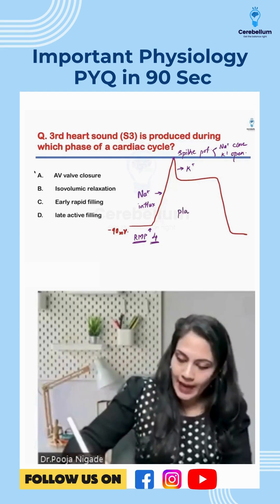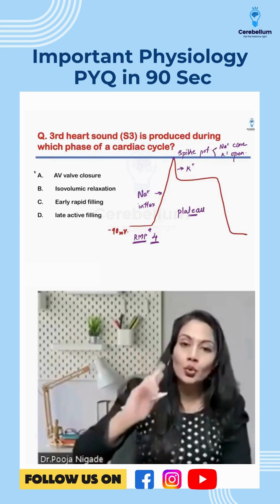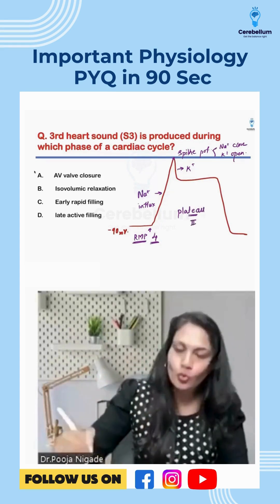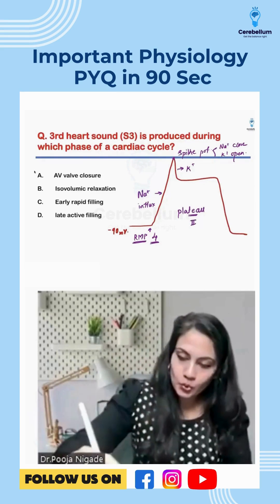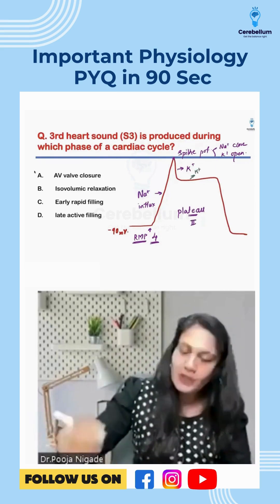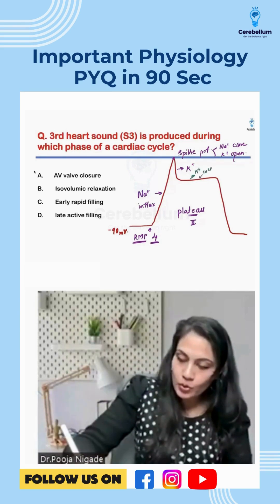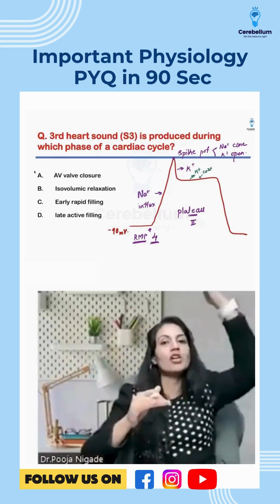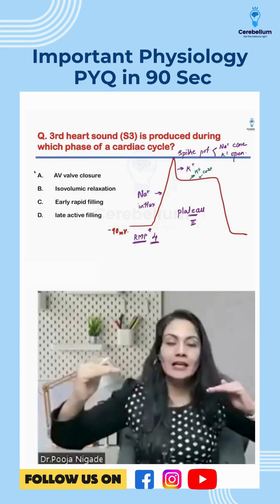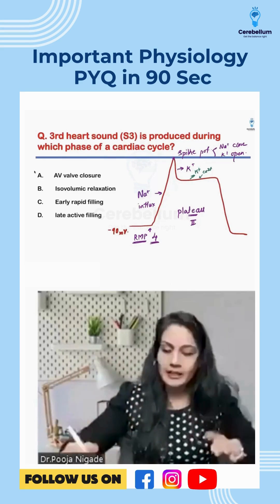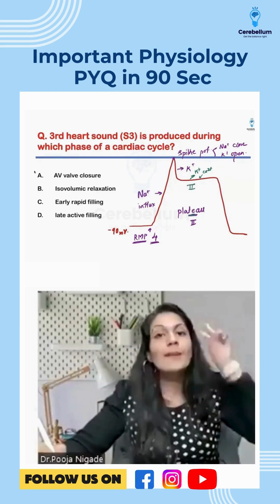There will be something known as a plateau — phase 2. Two ionic changes happen during plateau: potassium continuously goes outside, but the calcium channel is also open. One positively charged ion comes inside, one leaves — they balance each other. That's why we get a flat line, called the plateau. Remember: phase 2, two ionic changes, two two two.